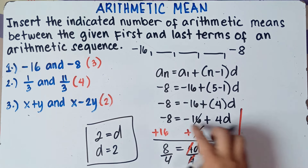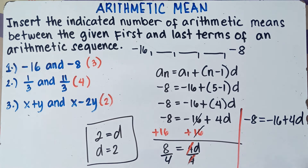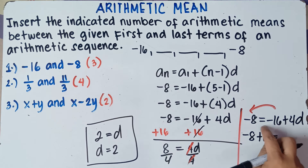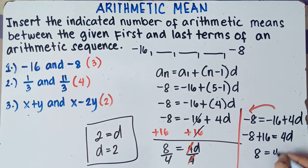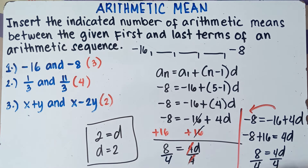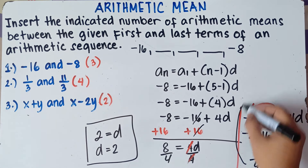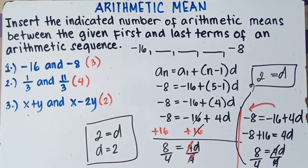For the second solution, we transpose negative 16 from the right side to the left. When you transfer across the equals sign, you change the sign. So negative 8, and negative 16 becomes positive 16, equals 4d. Negative 8 plus 16: unlike signs, subtract — 16 minus 8 is 8, copy positive sign, equals 4d. Divide both sides by 4: 8 divided by 4 is 2, so d equals 2. Therefore, our common difference is positive 2.